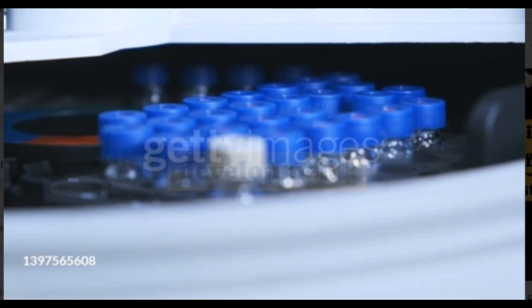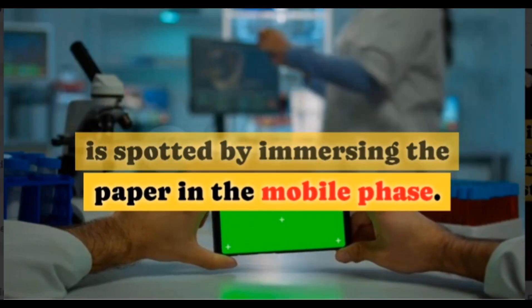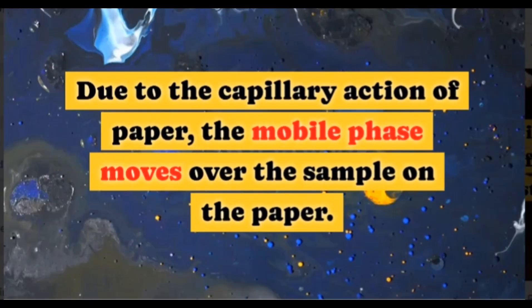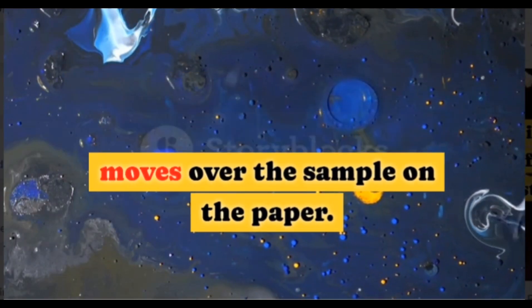Chromatogram development. Chromatogram development is spotted by immersing the paper in the mobile phase. Due to the capillary action of paper, the mobile phase moves over the sample on the paper.